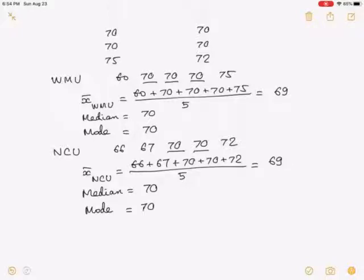So you can see that they have the same median, mean, and mode. However, the WMU team has a player who is relatively short, 60 inches, and a player who is very tall, 75 inches. This is why the NCU team has players whose heights are all within 6 inches of each other.